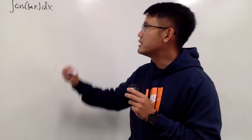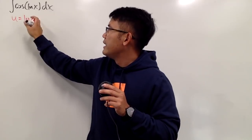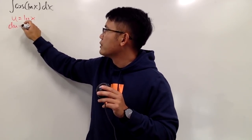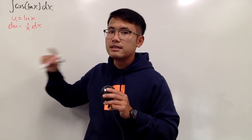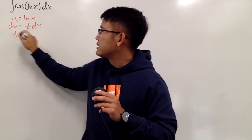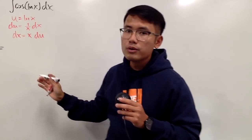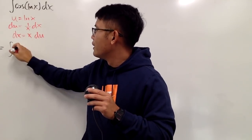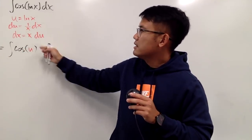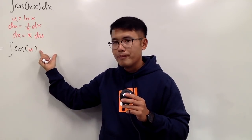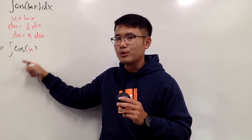The first way is that we are going to start off with a u-sub. Let u equal to the inside function, so u equals ln x. Then I will differentiate both sides, so we get du equals 1 over x dx. To isolate dx, we multiply by x on both sides, so dx equals x du. But if you just put x du in the integral, this x is not going to be in the u world, and unfortunately we don't have a 1 over x to cancel things out.